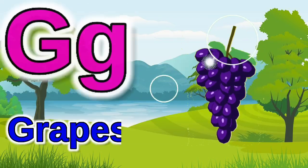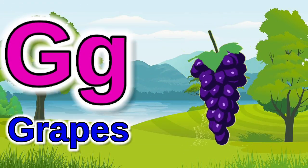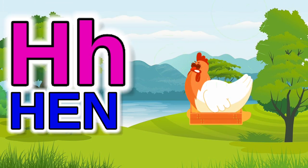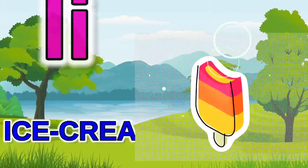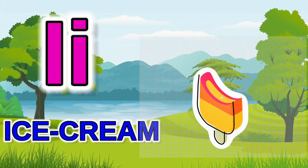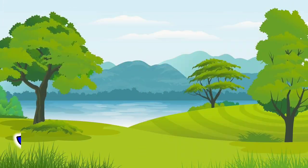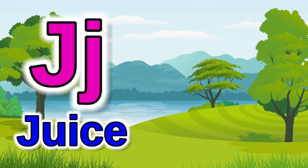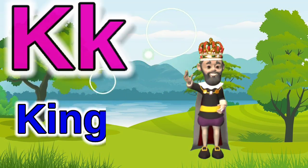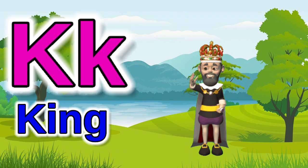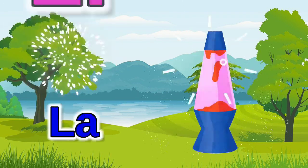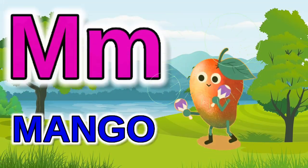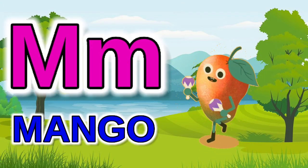G for grapes, H for hen, I for ice cream, J for juice, K for king, L for lamb.